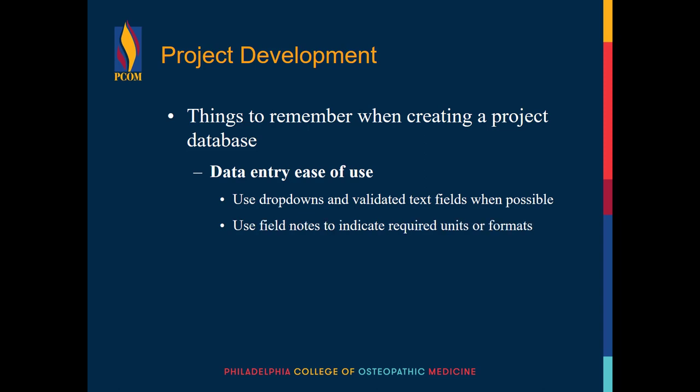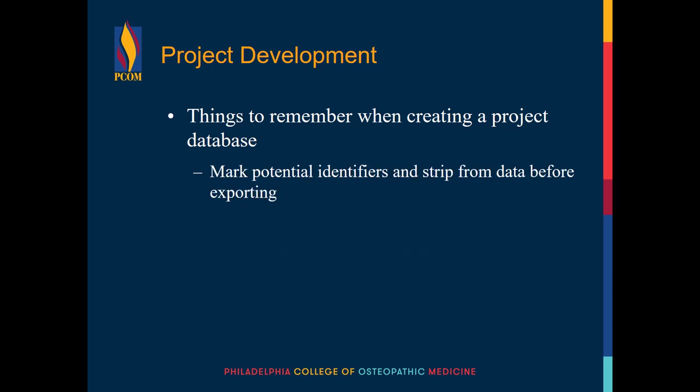You can use field notes to indicate required units or formats. Group similar variables together on separate forms and keep the forms reasonably short. It's easier for people to enter many short forms than one incredibly long form. Also, REDCap forms aren't saved automatically — they're saved when you click the Save button at the bottom of the form. If you have a very long form, you run the risk of a technical error or session timeout before saving. You'll want to identify all protected health information so you can strip away that data before exporting. We recommend running a quick check on the data dictionary to see if it meets general best practice standards. You can find more information about this on our REDCap guide.